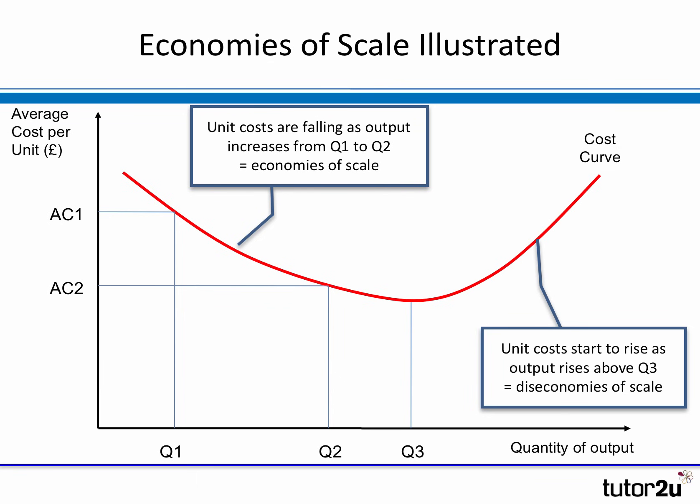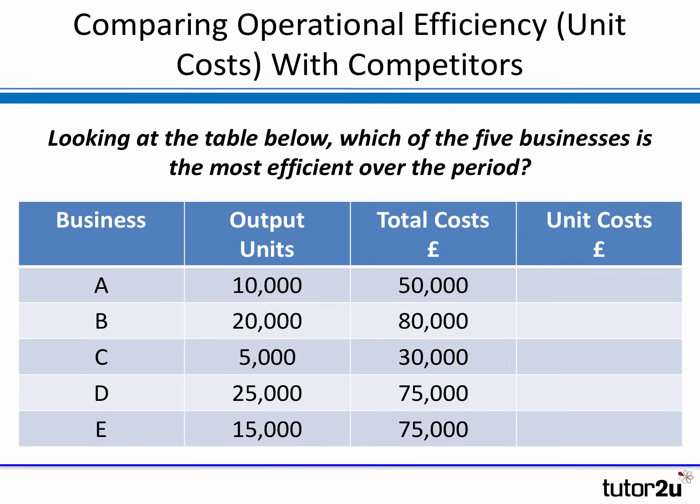If you want to see economies of scale illustrated graphically, this is the classic diagram. It shows average cost per unit on the y-axis and quantity of output on the x-axis. The red line shows that for most of the time unit costs fall as output increases — that's economies of scale. There is another concept called diseconomies of scale, which we'll look at in a separate video, where unit costs actually start increasing beyond a certain output level.